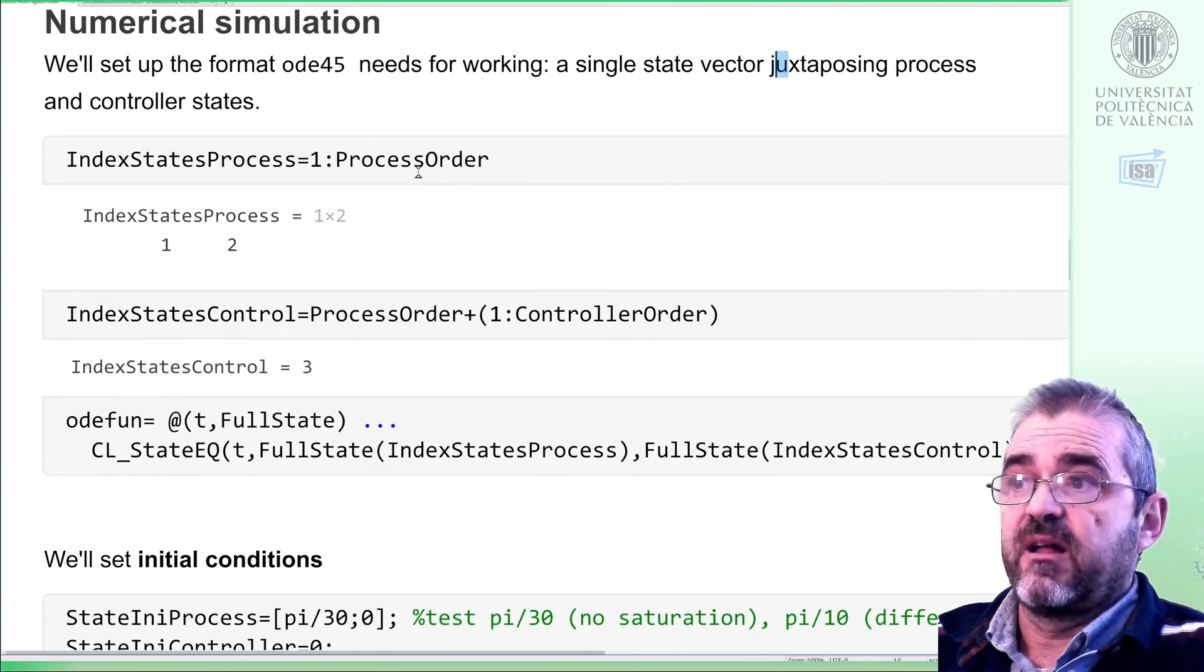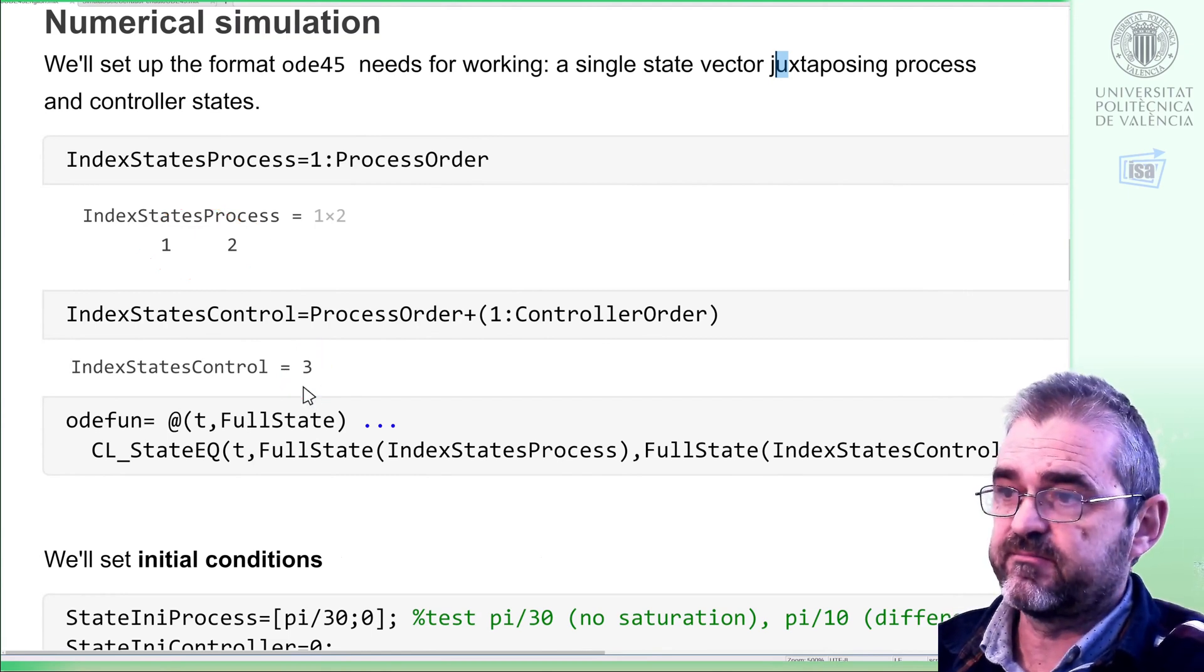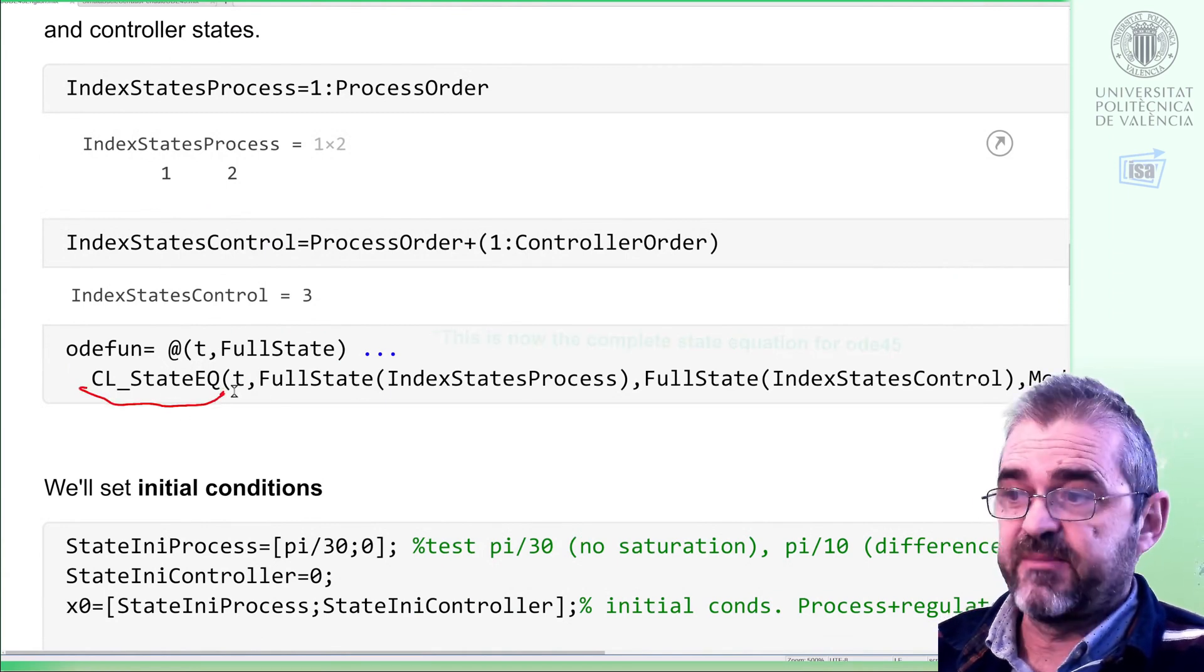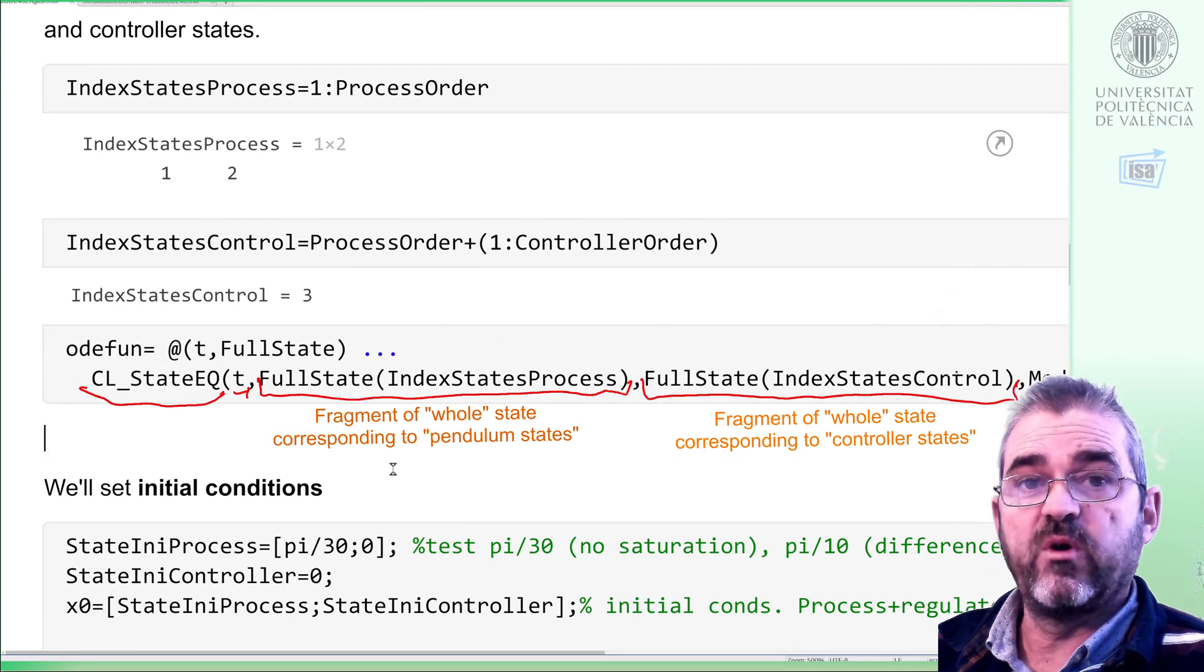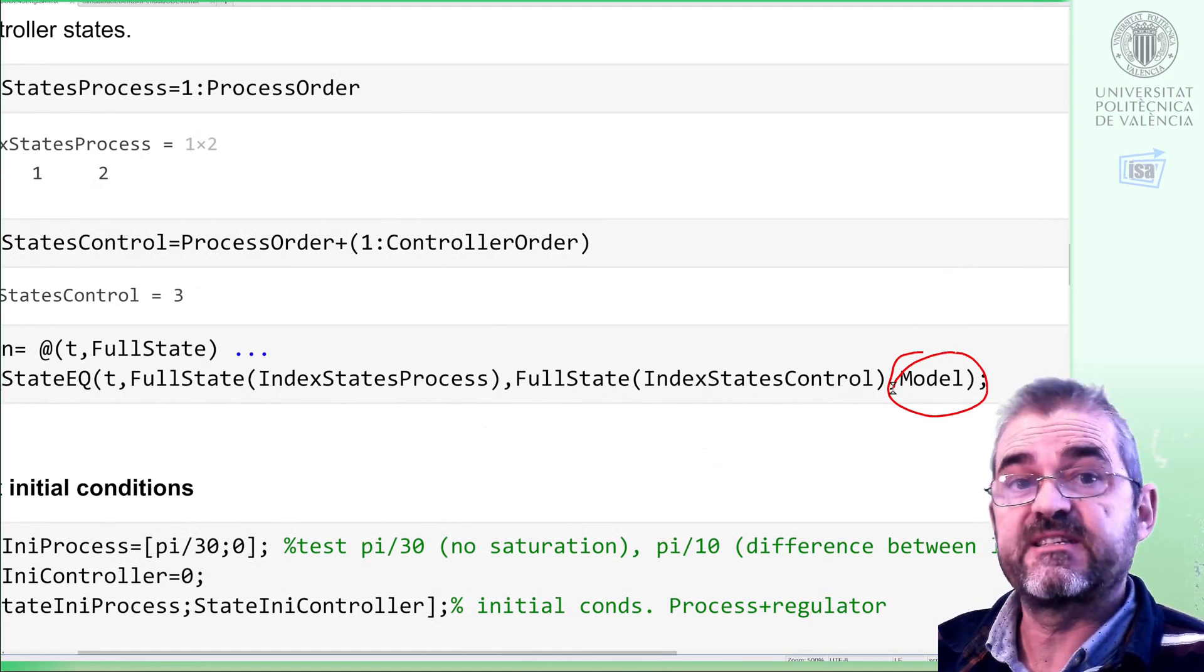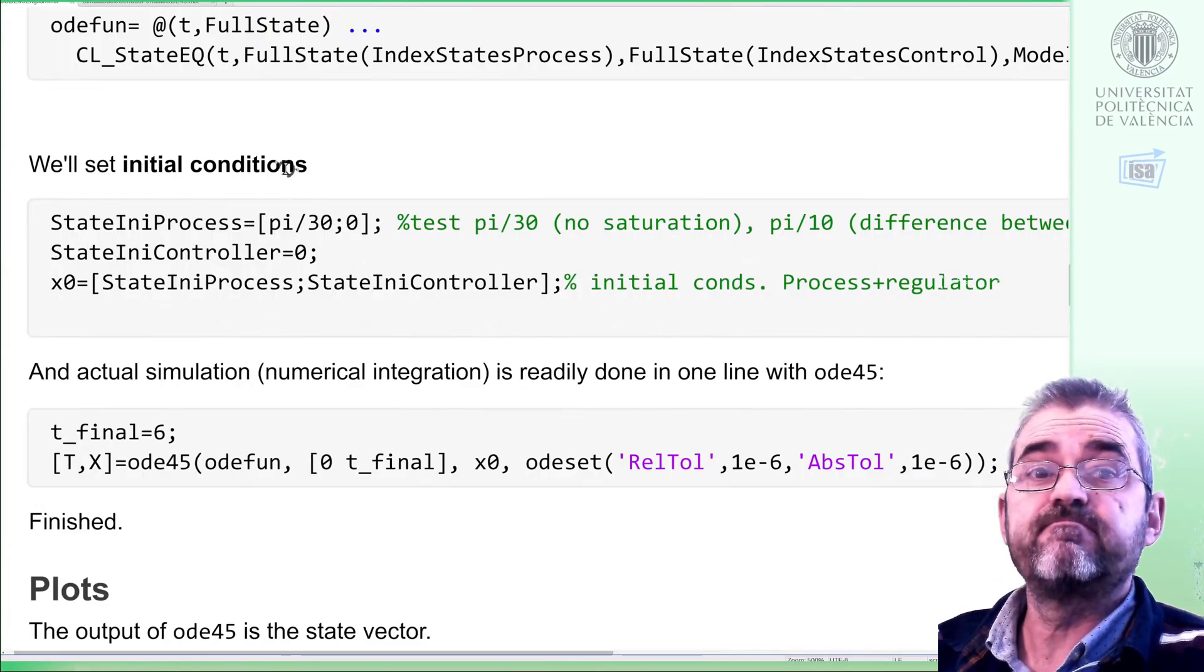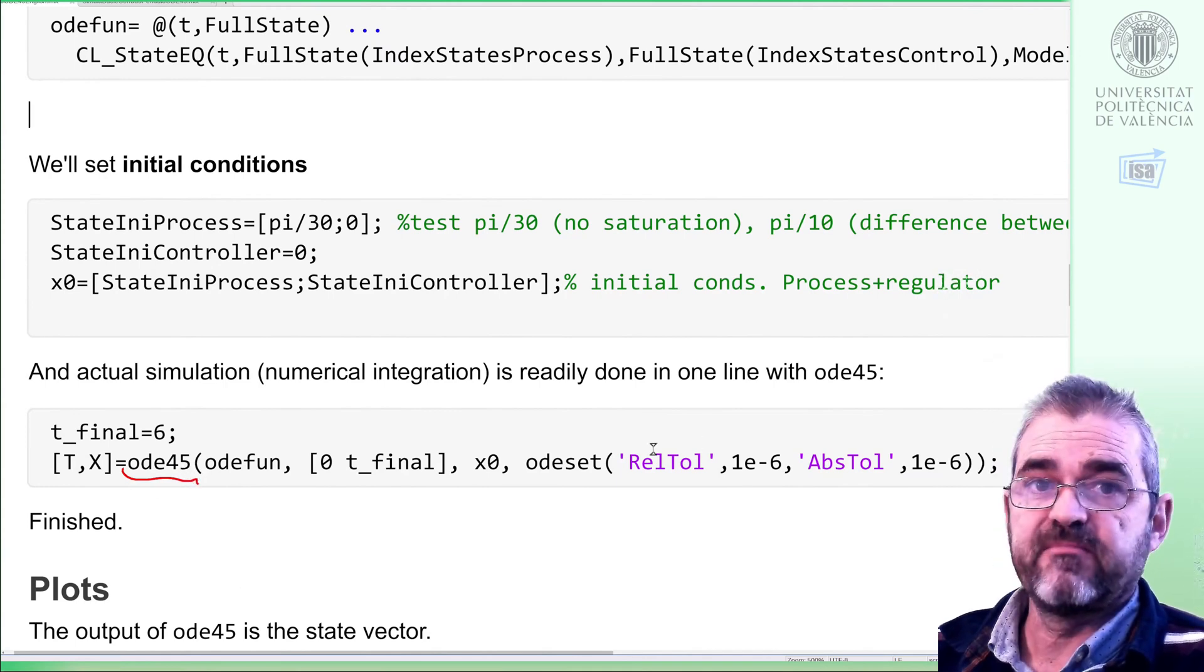We will build a single state vector, and then the first two elements of that will be the process state. The third one will be the controller state. So ODE45 will call this function passing the clock and the full state, and in this function, I will evaluate the closed loop state equation passing it the clock and the first two elements of the full state as process state, the third element of the full state as controller state, and the model with the separate process and controller state and output equations. With all that, this will execute this code we have. So the remaining things are setting up initial conditions and calling the differential equation solver, ODE45 for instance, to carry out the simulation, and that would finish.